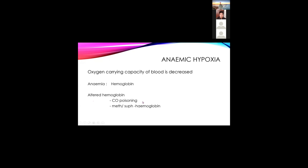The second type is anemic hypoxia. Oxygen carrying capacity is mainly dependent on hemoglobin. Anemic hypoxia means your hemoglobin level is low — that is anemia. Another cause is altered hemoglobin, called functional anemia, where usable hemoglobin is low because hemoglobin is irreversibly bound to carbon monoxide, reducing the usable hemoglobin level.